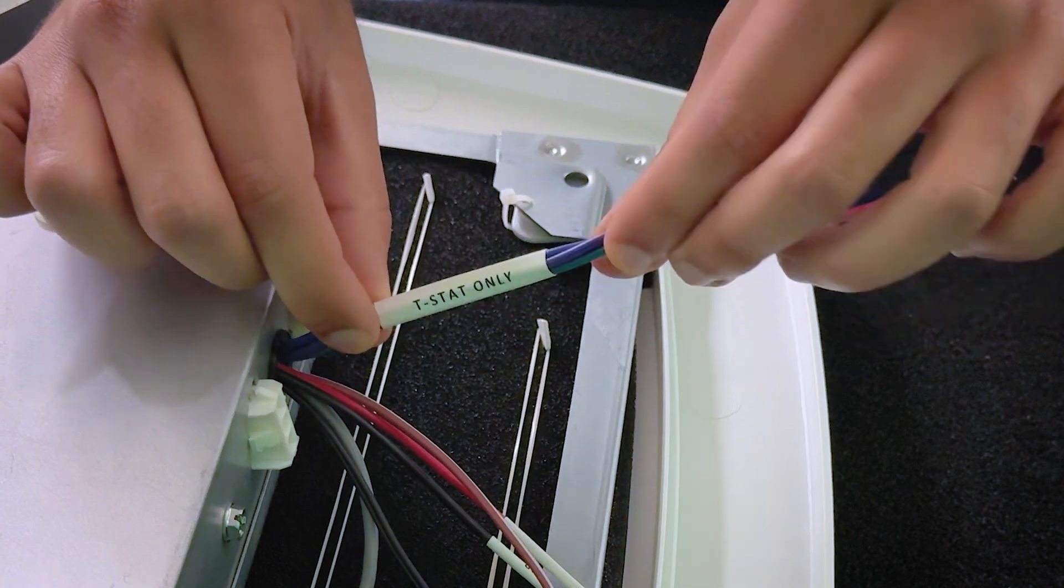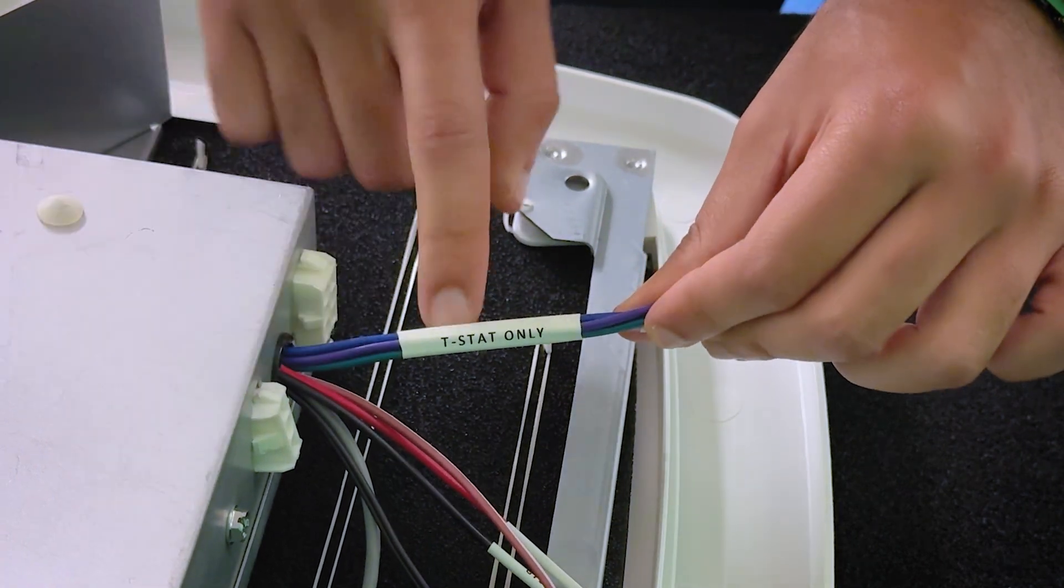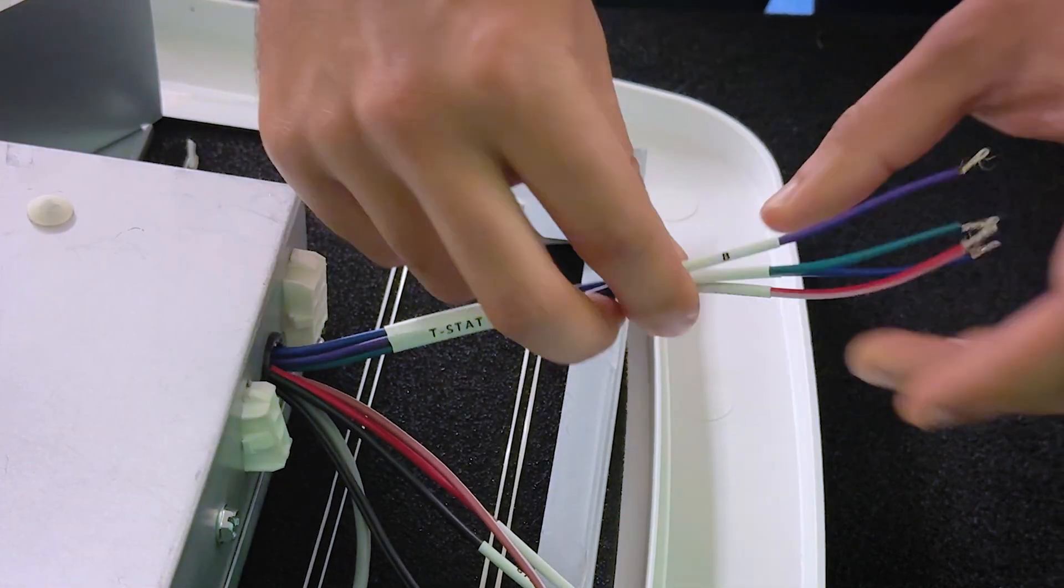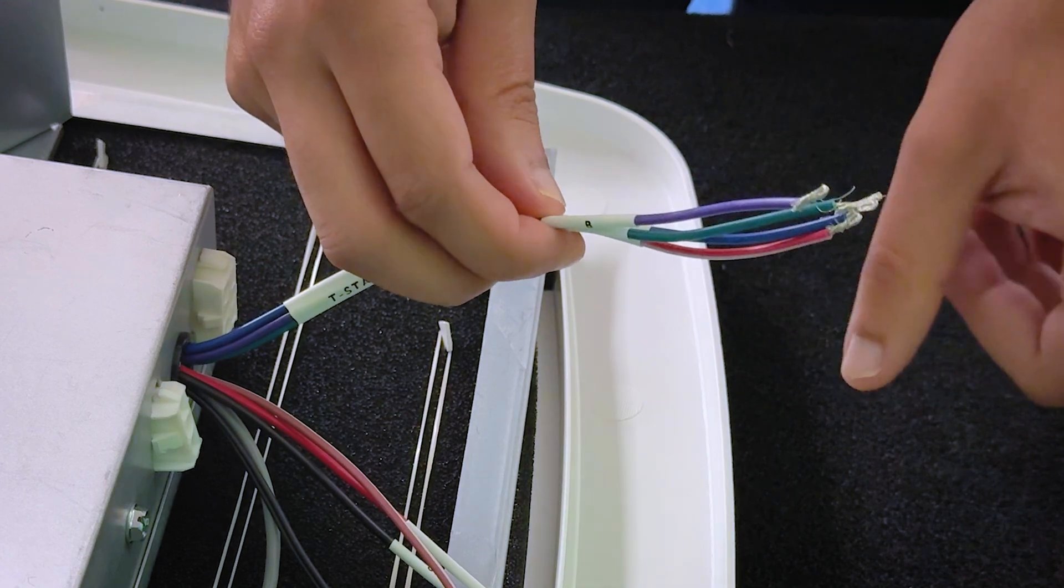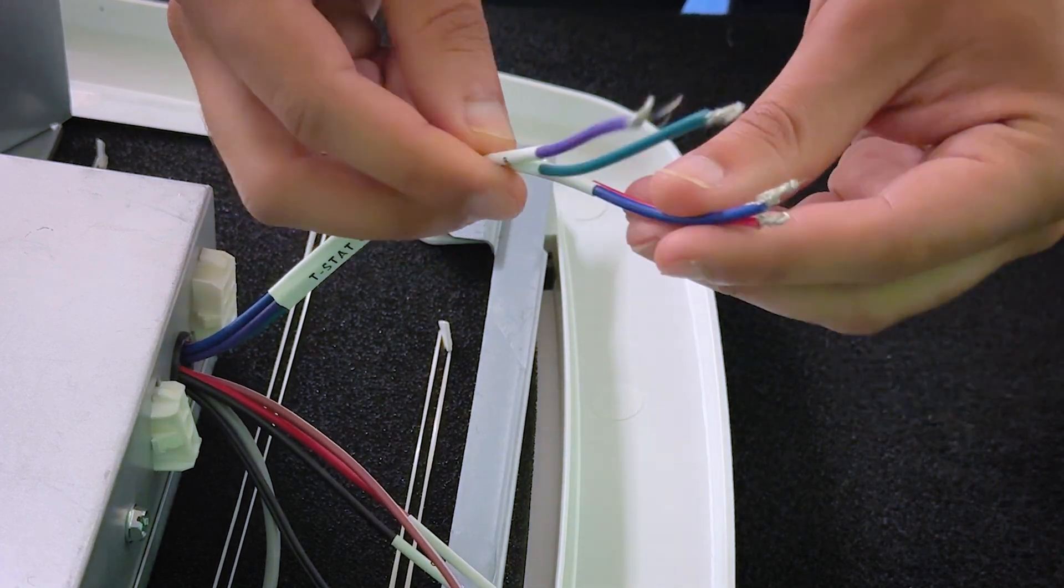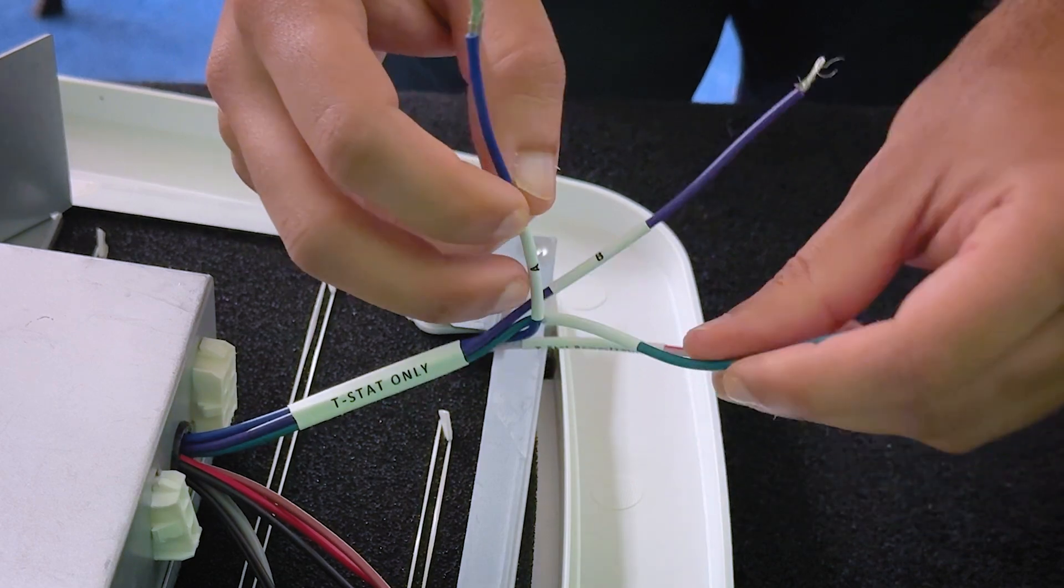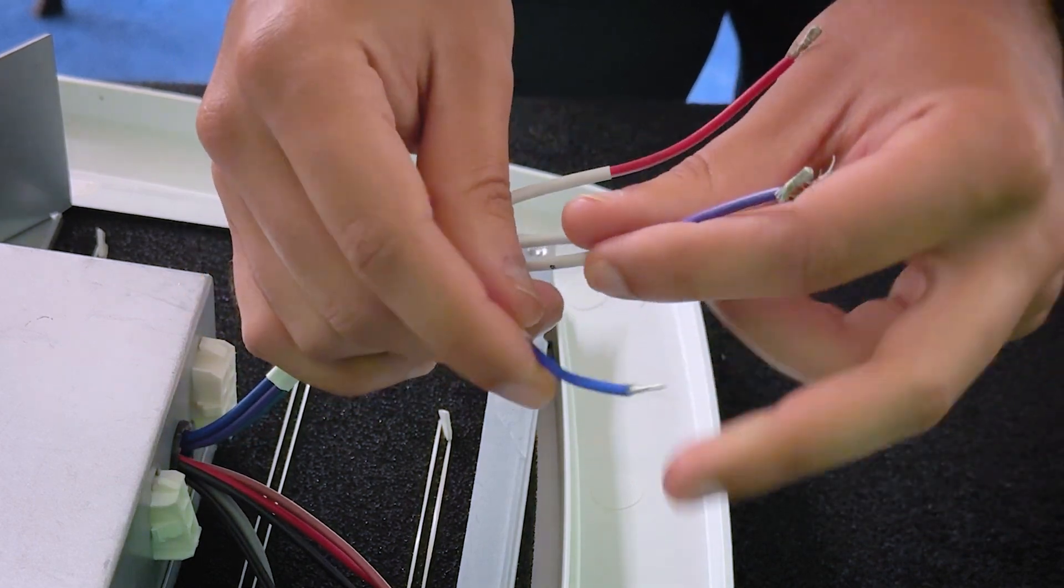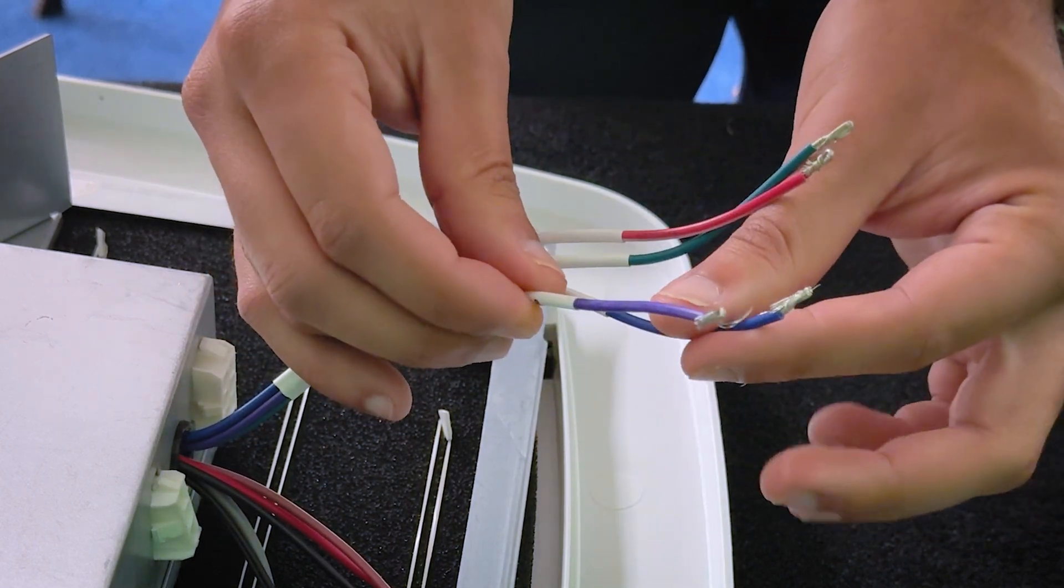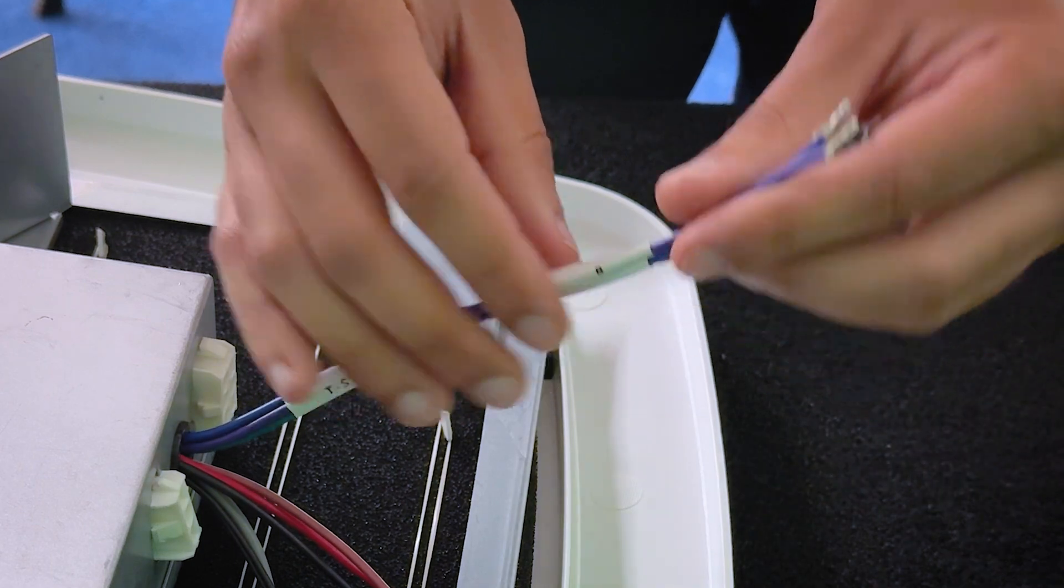You have a bundle of wires that are labeled T-STAT only. These wires go straight to the thermostat, so you're going to extend these wires. You have a power, you have a ground which is your common, and then you have two communication wires labeled A and B. Those go straight to the thermostat. These are outputs.